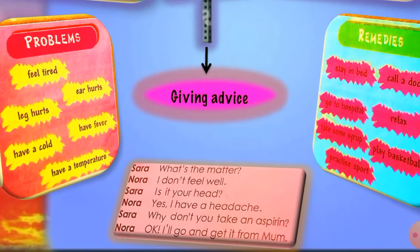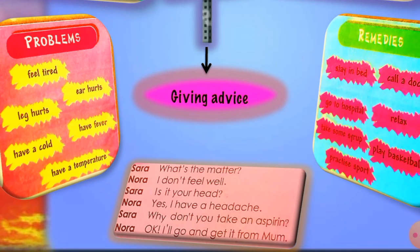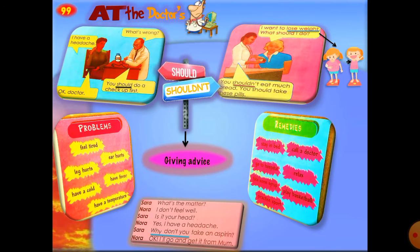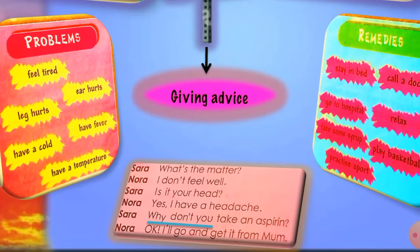Here is an example dialogue. Sarah says: 'Nora, what's the matter?' Nora replies: 'I don't feel well.' Sarah asks: 'Is it your head?' Nora says: 'Yes, I have a headache.' Sarah advises: 'Why don't you take an aspirin?' Nora says: 'Okay, I'll go and get it from mom.' Note that 'Why don't you...' is another way to give advice.